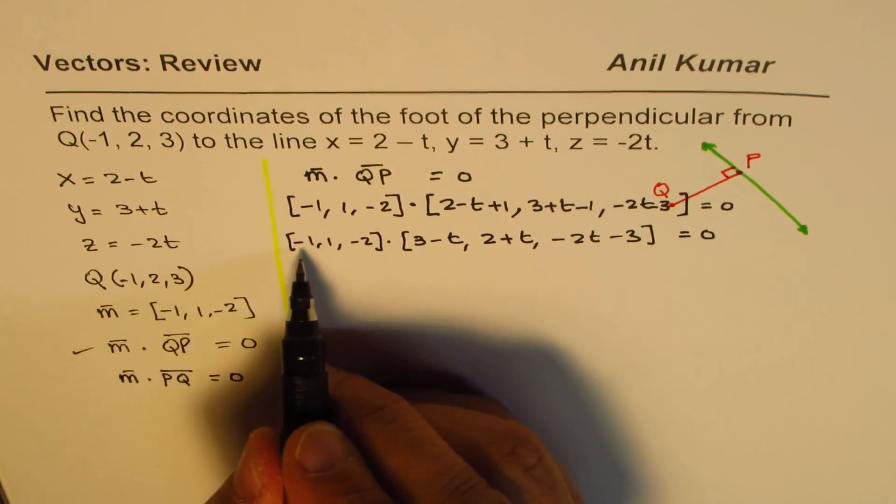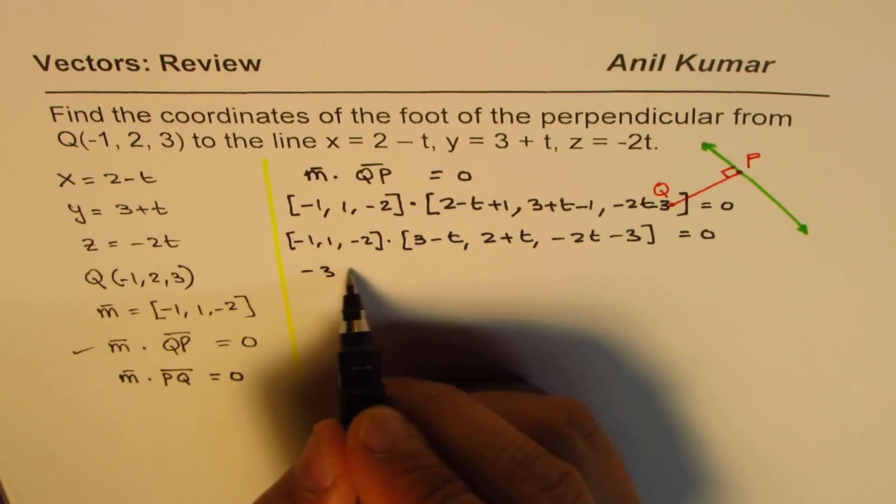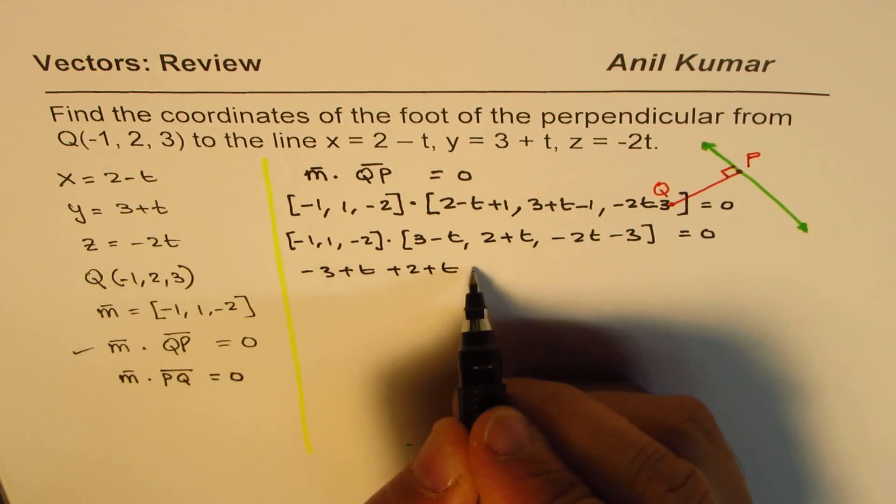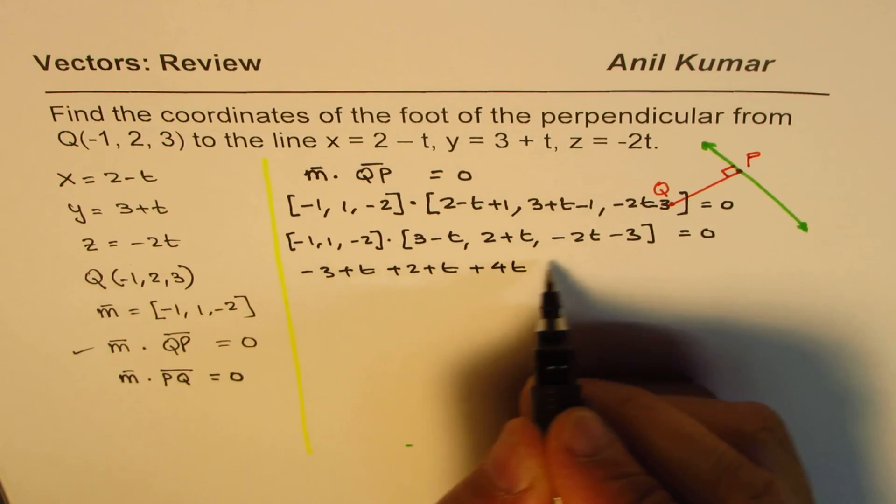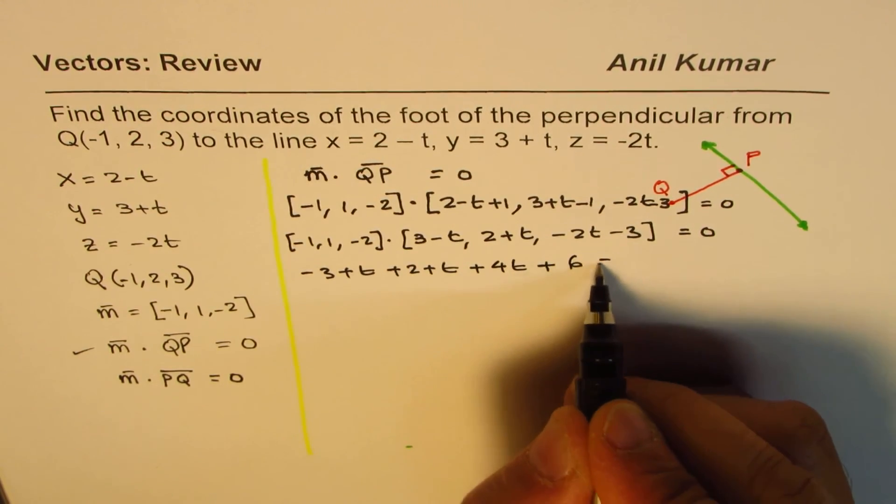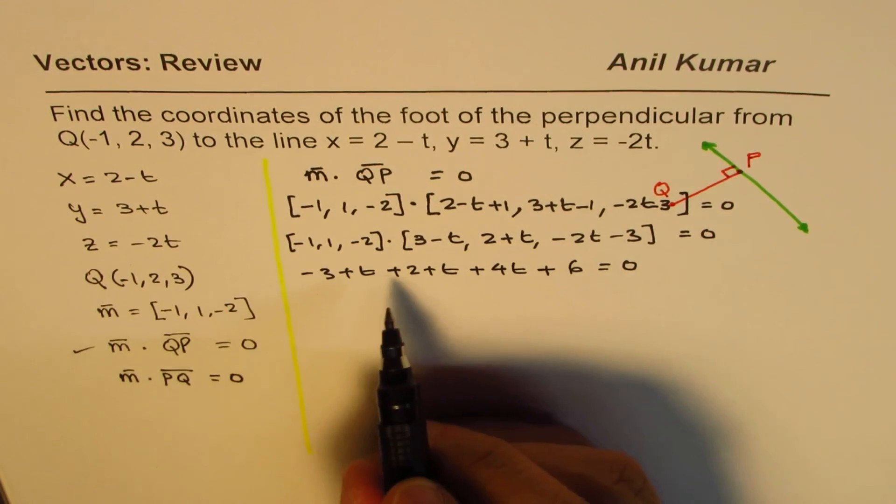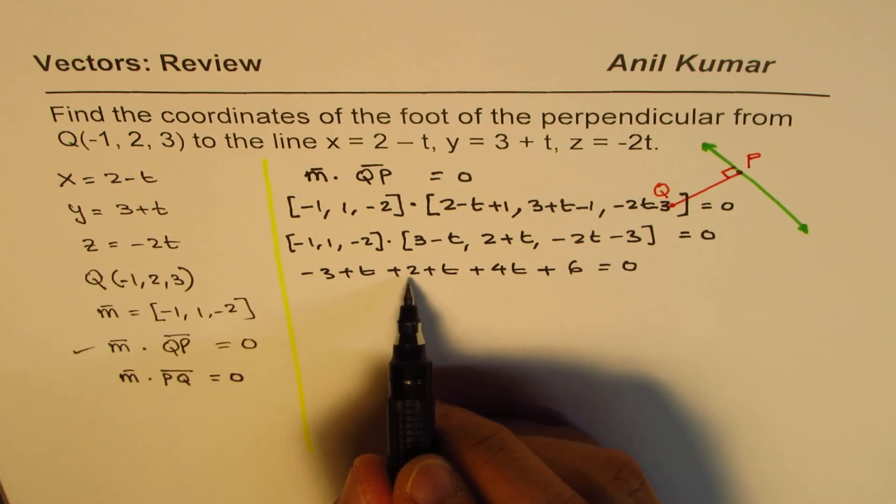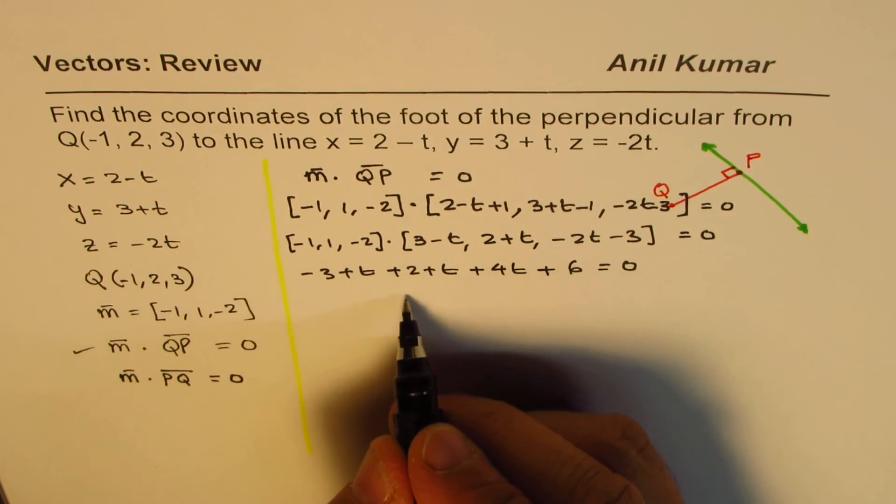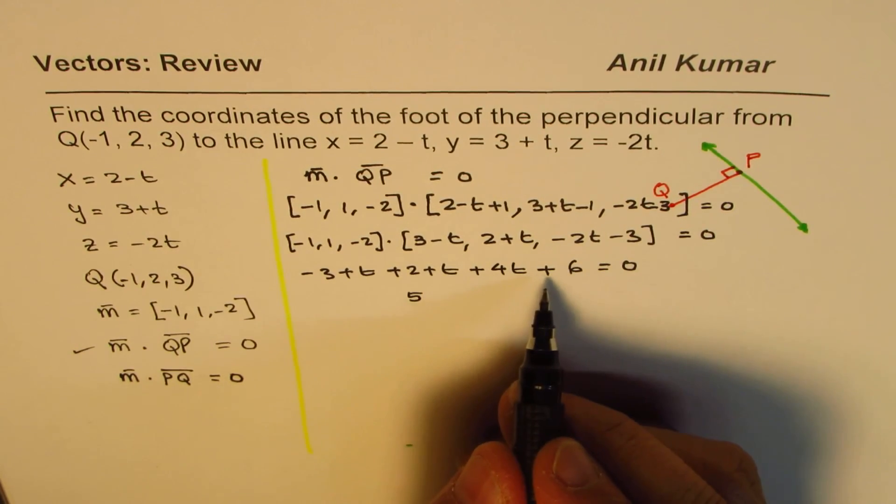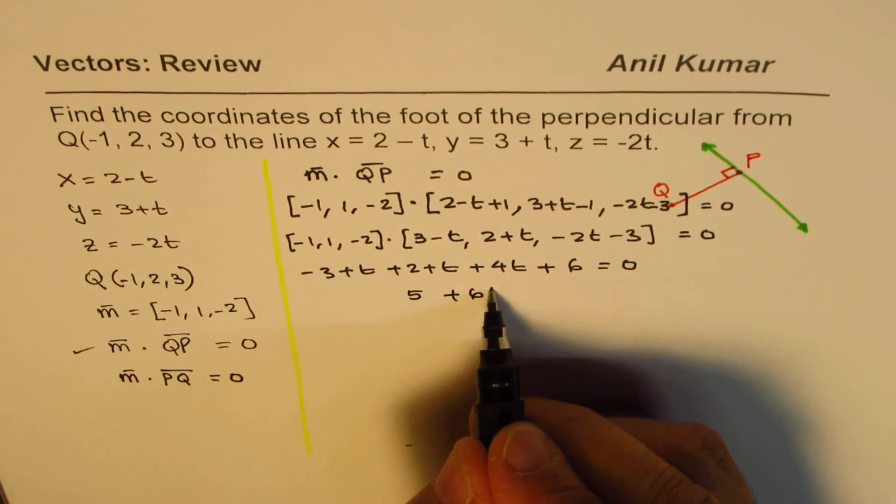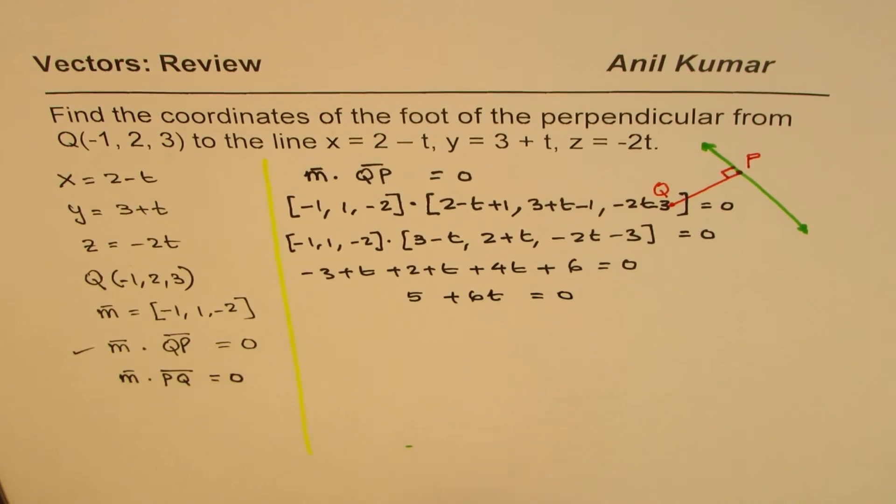Let's apply the dot product. So -3 + t, 1 times this will give us 2 + t, -2 times, we'll change the signs, 4t, and minus minus becomes plus 6, equals to 0. Let's combine the -3 + 2, that is -1, and 6 will give us 5. So we have 5 here. And as far as t is concerned, 1, 2, and 4, 6. So 6t. So that is equal to 0. So this is what we have at present.